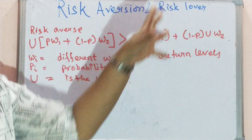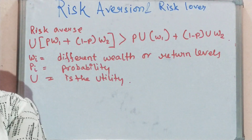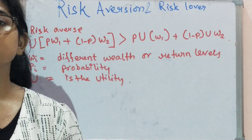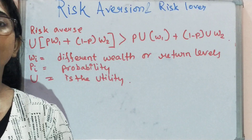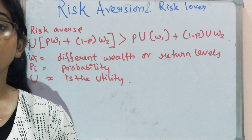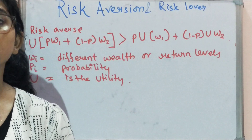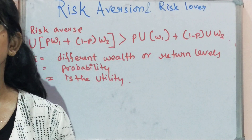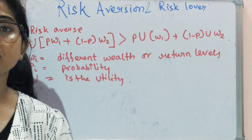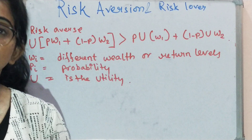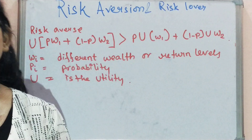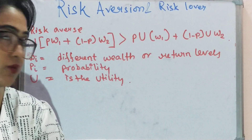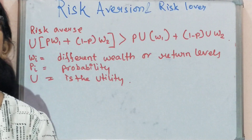Today's topic is risk aversion and risk lover. Whenever we have a gambling situation or whenever you play a game, we have two chances: either we can lose or we can win. The probability of losing is half and the probability of winning is also half. So if the probability of losing is p, the probability of winning is 1 minus p. This is what we know from basic probability.